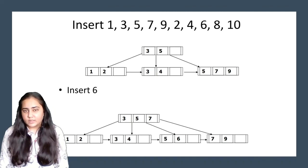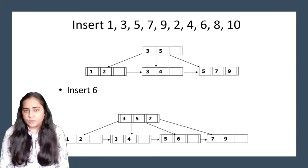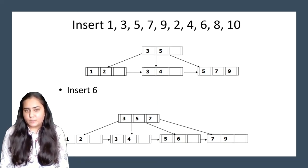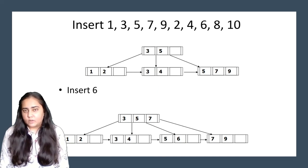Next I insert 6, which should go to the right of 5, but there's no space. With 5, 6, 7, and 9, the key in the middle is 7, so 7 goes to the top. A copy of 7 is maintained in the leaf nodes — right of 7 still has 7 and 9, and left of 7 has 5 and 6. That's how this insertion works.